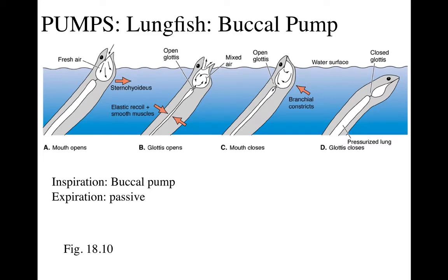The buccal pump is a pump in the throat. It works by having the animal open its mouth and expand its buccal cavity or throat, drawing air in. At the same time, the animal opens its glottis, allowing the air already in the lungs to escape, so that mixes. That's sort of expiration and inspiration combined.